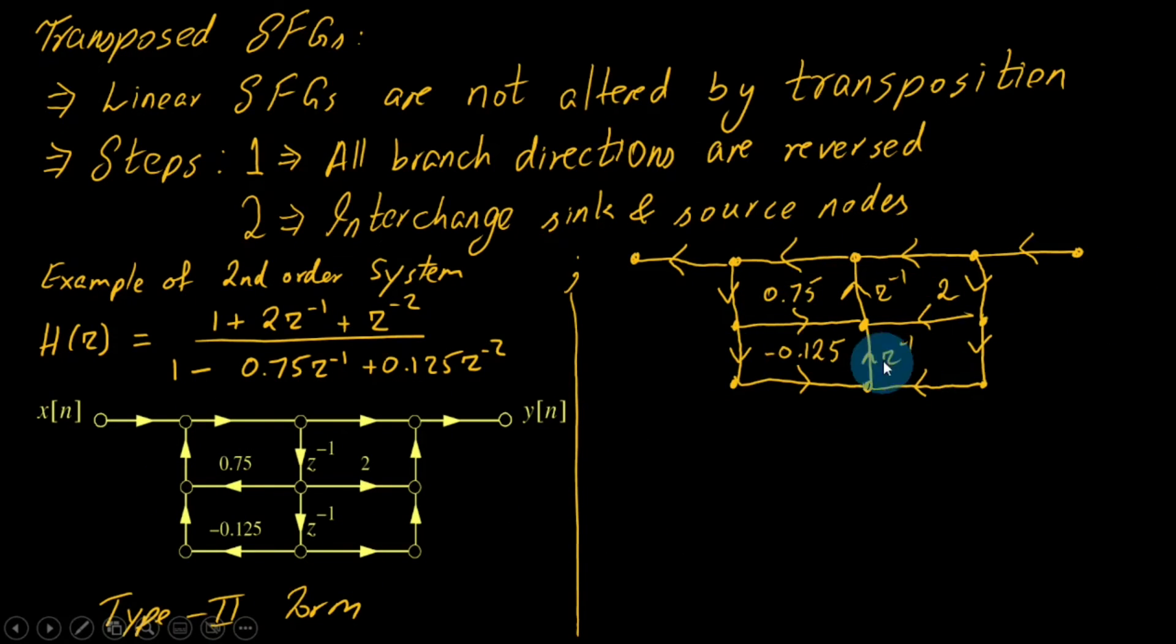In the second step, we interchange the sink and source nodes. This was y(n), now it becomes x(n), and this becomes y(n). This is a complete transposition. To express it in a more simple way, we flip it.